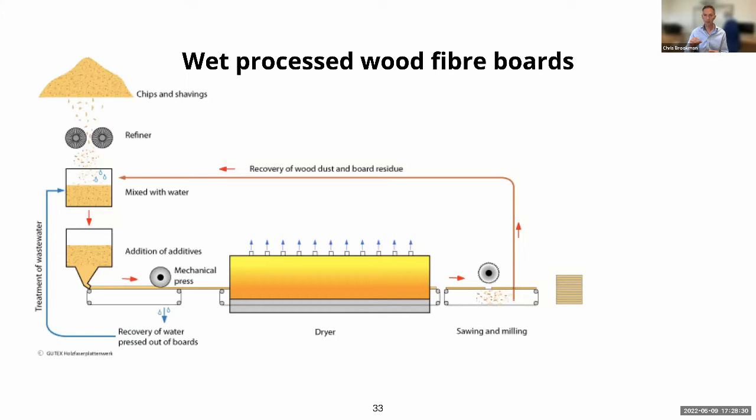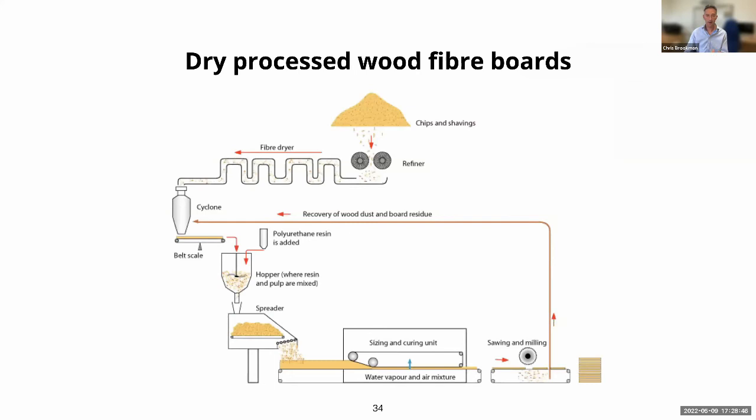Those layers are then steamed to melt the natural lignin around the fibres, which bonds them together, and then laminated up to give you whatever thickness of board you want. With dry process boards, you take the same material, dry and refine it, blow in a polyurethane resin, put it on a conveyor belt, compress it to the right thickness and density, and gently steam cure it. Those boards are made at whatever thickness you want — there's no need to create 20 mm layers and laminate up; you simply make them as a homogeneous single board at whatever thickness.